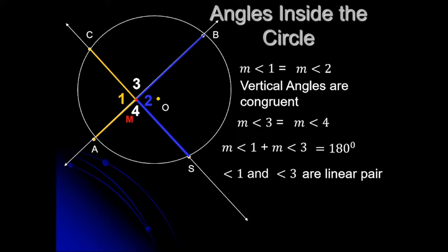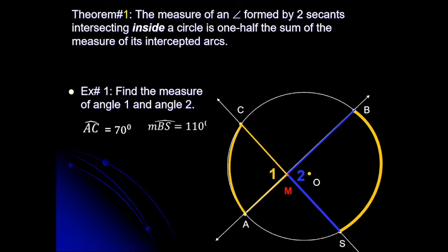What about angle 1 and angle 3? The measure of angle 1 plus the measure of angle 3 is equal to 180 degrees, because angle 1 and angle 3 are a linear pair. Linear pairs are supplementary angles — the sum of the two angles is 180 degrees. We have two secants, line CS and line AP, intersecting inside the circle.